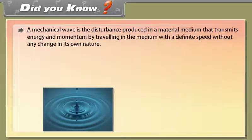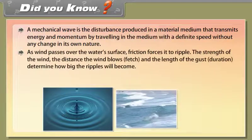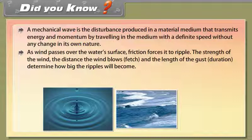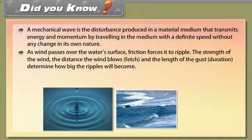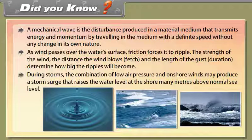Did you know? A mechanical wave is a disturbance produced in a material medium that transmits energy and momentum by traveling through the medium at a definite speed without any change in its own nature. As wind passes over a water surface, friction causes ripples; the strength of the wind, the fetch, and the duration determine how big the ripples become. During storms, the combination of low air pressure and onshore winds may produce a storm surge that raises the water level many meters above normal sea level.